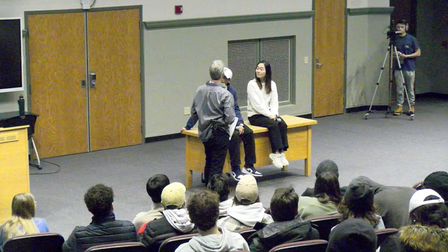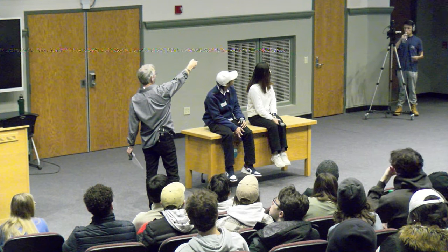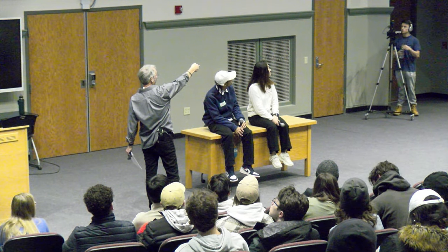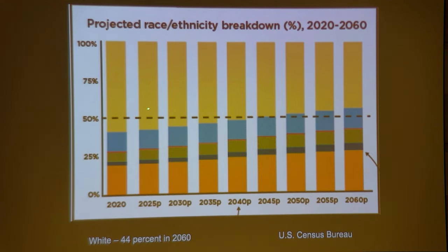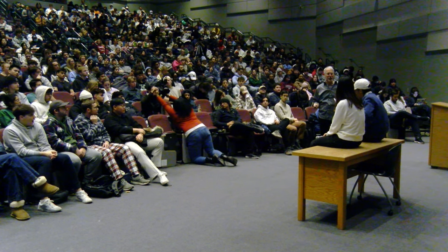Here's the projected race-ethnicity breakdown going forward. Right now we're about 60% white, and as we go to 2025, 2030, up into about 2060, white people become very much the minority. By 2060, we're thinking about 40% of the United States being white. That is a really big change.